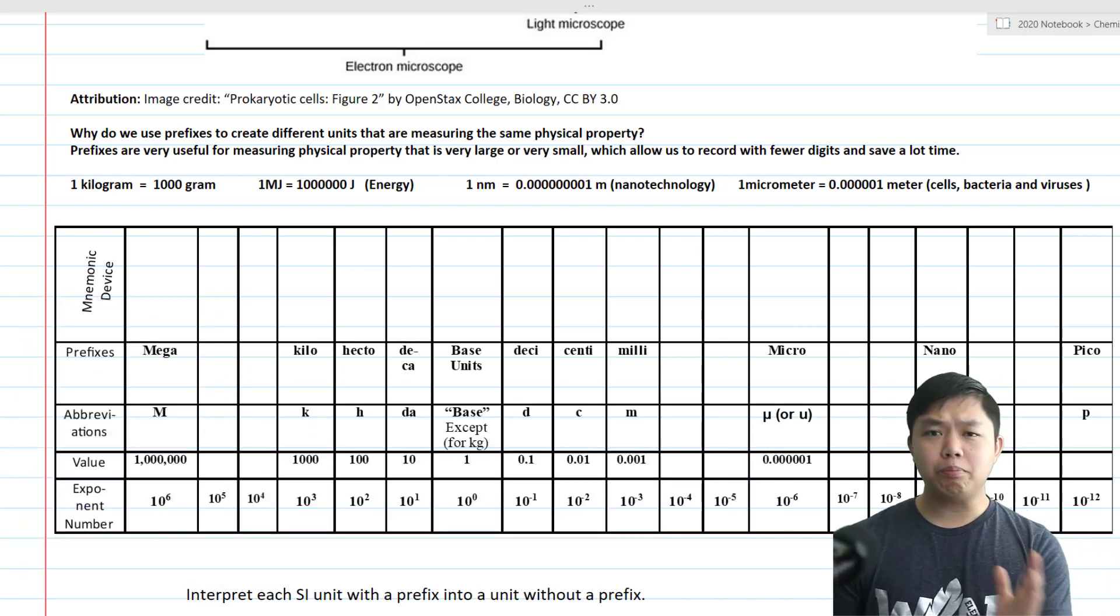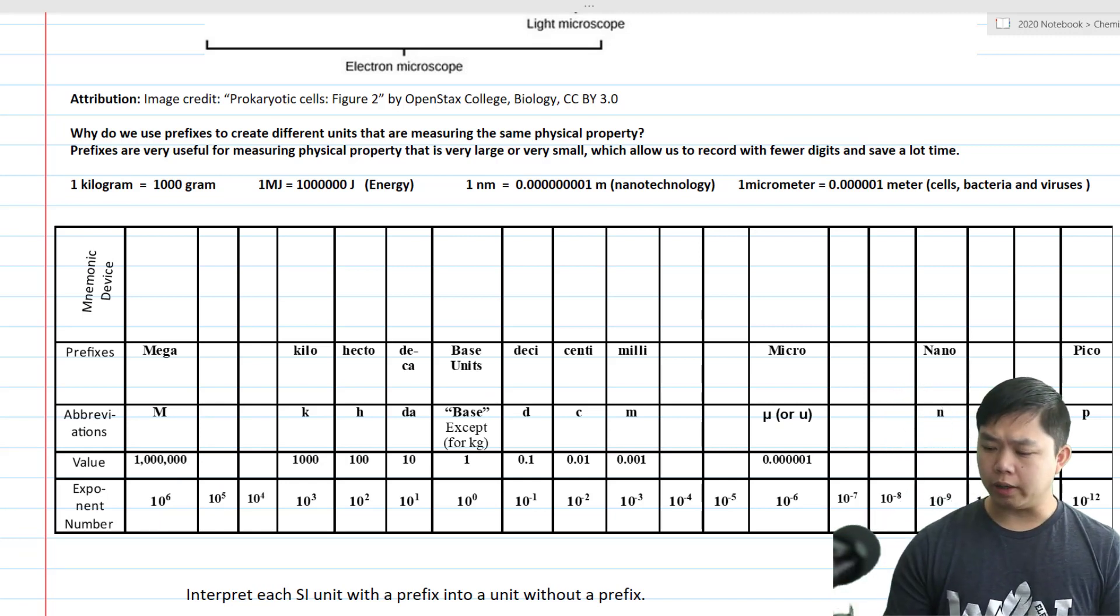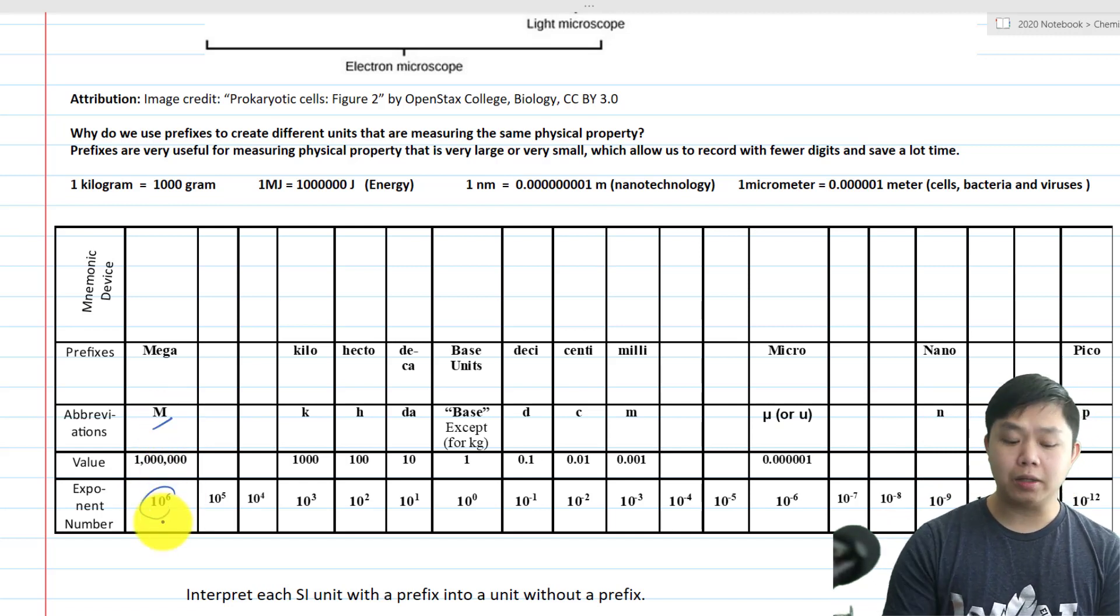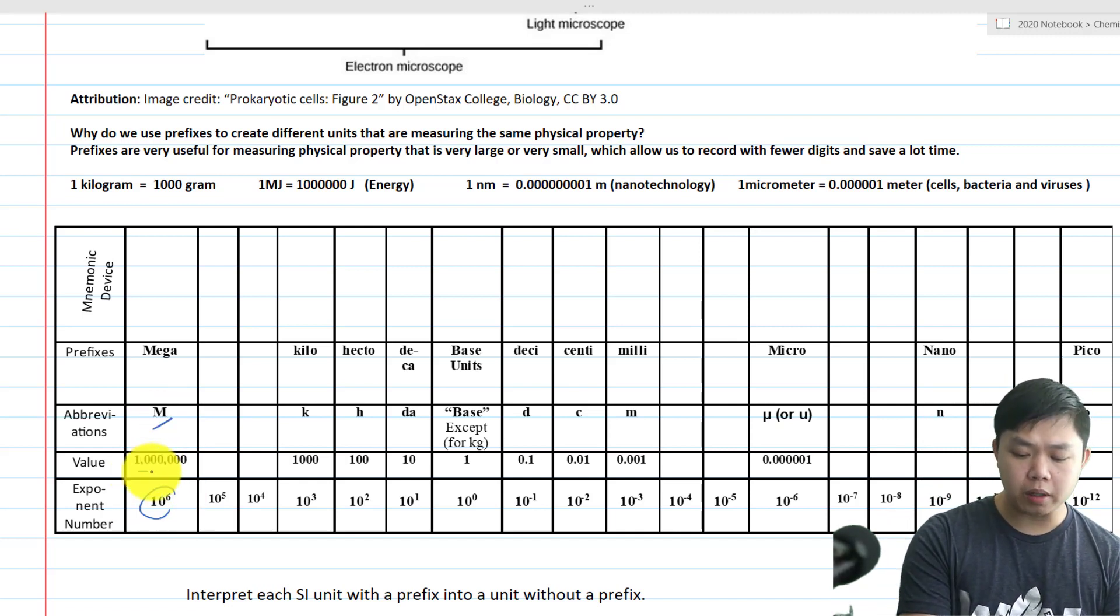We learned that different prefixes represent different values. More importantly, if we look at this right here, for example, the prefix MEGA represents 10 to the 6th or 1 millionth.